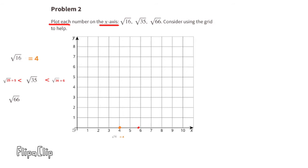Finally, the square root of 66: I know 8 times 8 is 64 and 9 times 9 is 81. Since 66 is just a little bit more than 64, we can plot this point just a little bit to the right of 8.